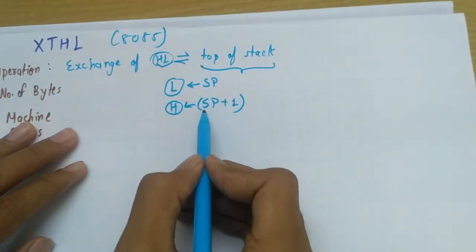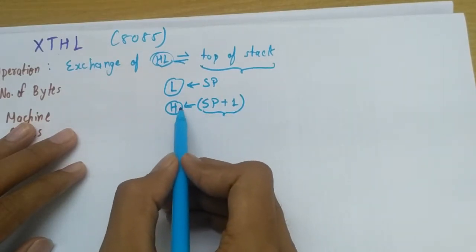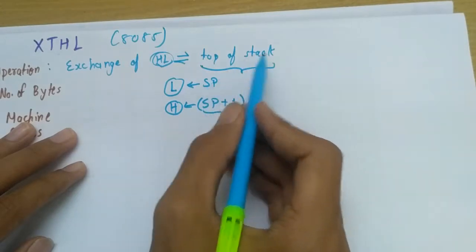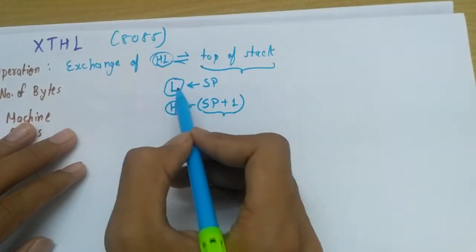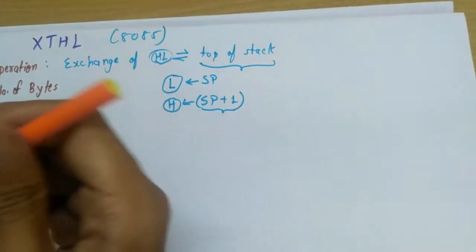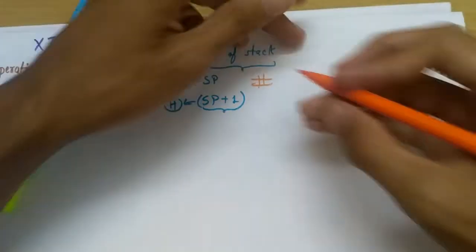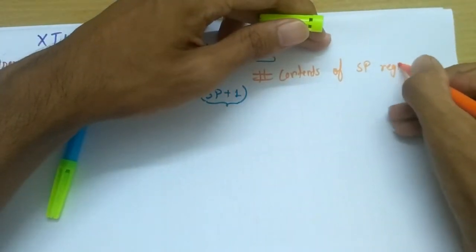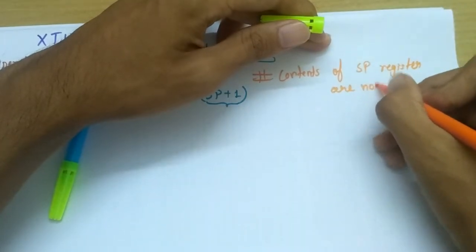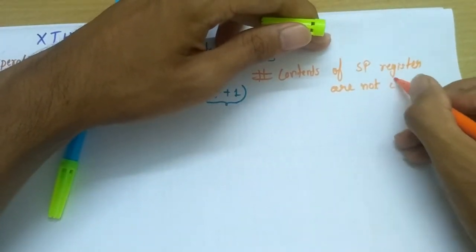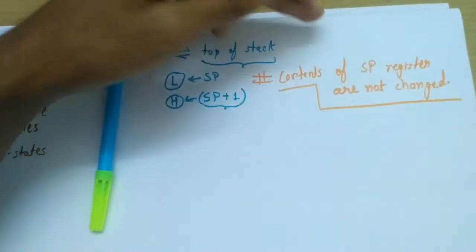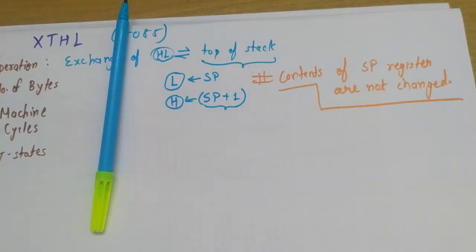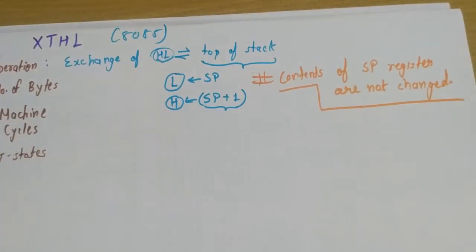So the data at location SP plus one will go to H, and data from SP, that is the top of the stack currently, will go to L. Most important thing to note is that contents of stack pointer register are not altered, meaning they remain unaltered, not changed. After execution of this instruction, whatever address the stack pointer is pointing to remains as it is.